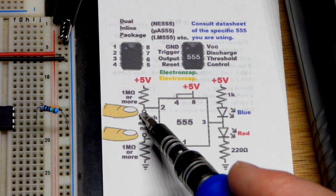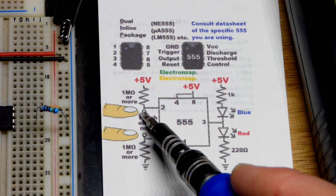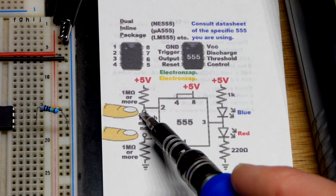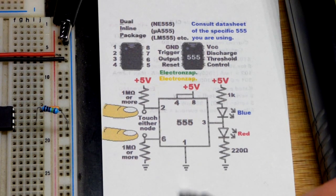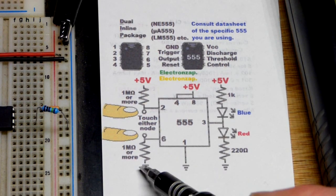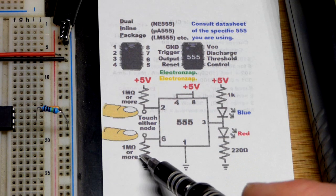That's what happens when we touch pin 2. Give it less than one-third of the supply voltage, output goes high, red LED lights up. It's going to stay that way because that's the way a 555 timer is made, as long as these two pins aren't doing anything.